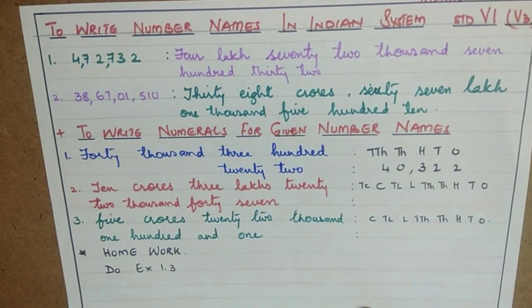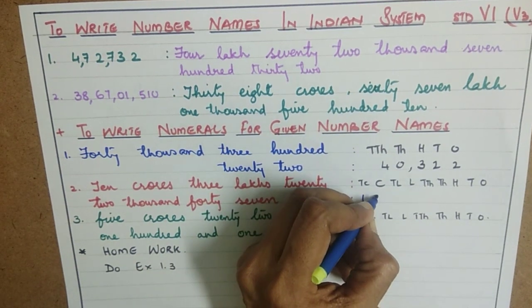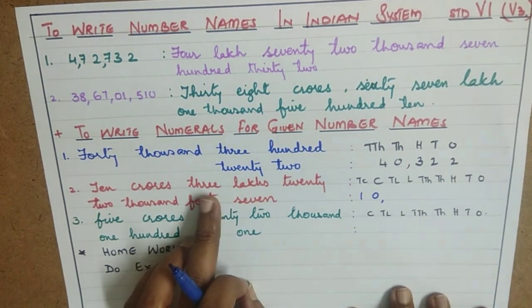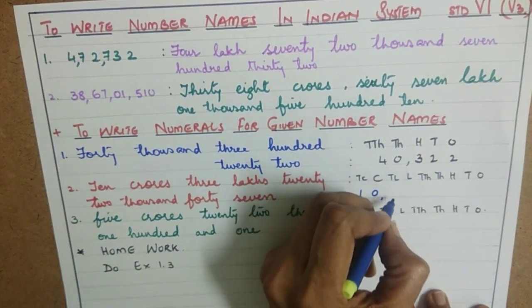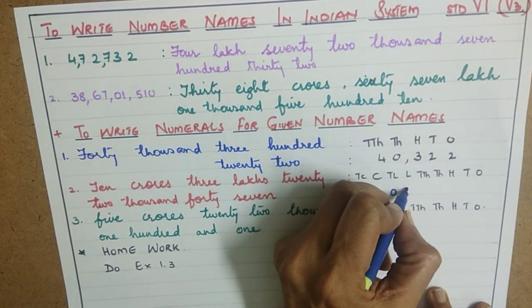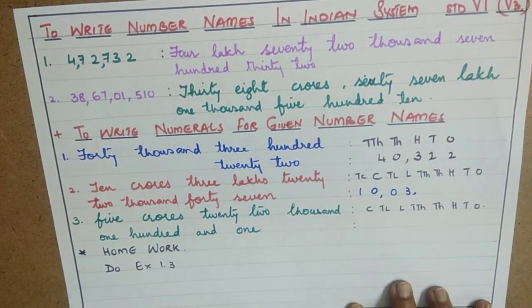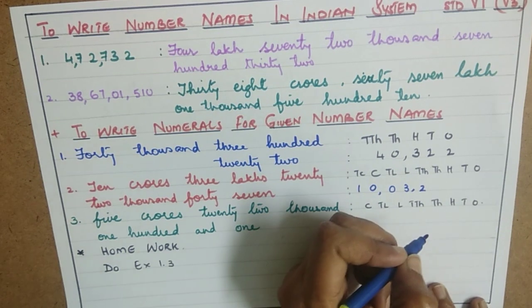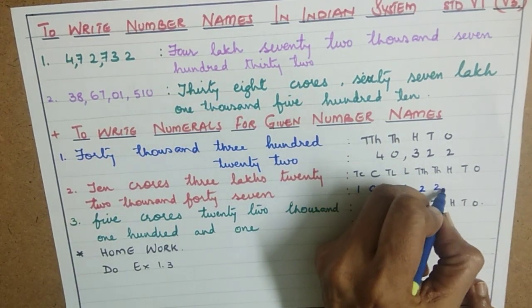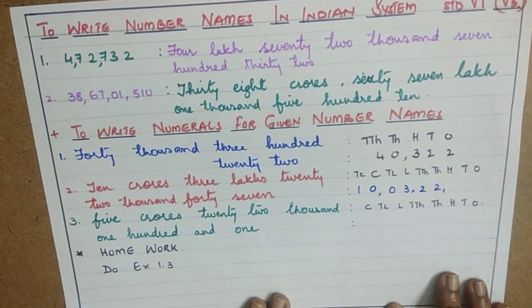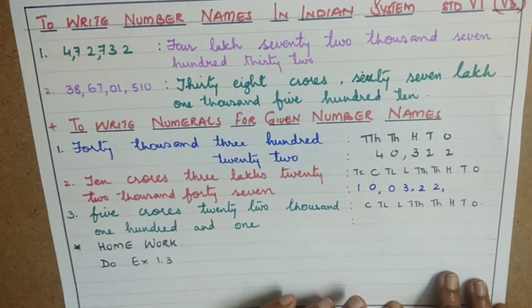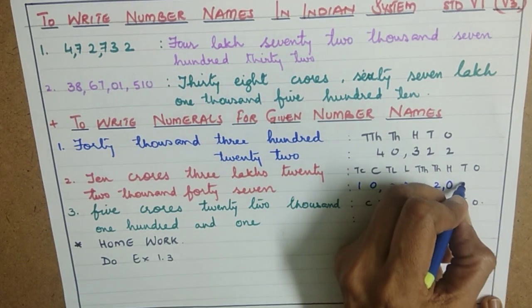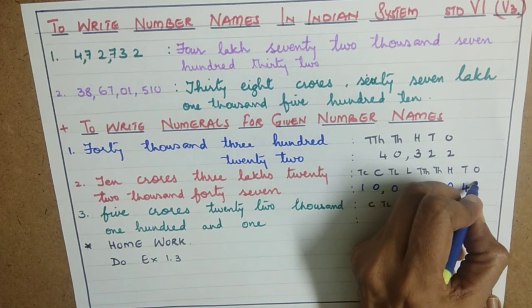10 crores: write 10 under the ten-crores place, and 0 under the crores place. Then 3 lakhs — but no 10 lakhs are given, so put a 0 under 10 lakhs and 3 under the lakhs place. Next, 22,000: 2 is in the ten-thousands place, and 2 in the thousands place. Then 47 — there is no digit in the hundreds place, so put a 0, and write 4 tens and 7 ones.